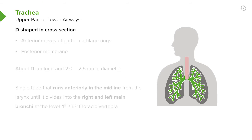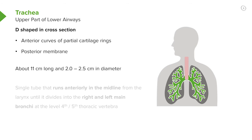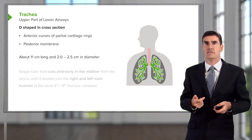The trachea is a D-shape in cross-section. Posteriorly, there's a flat membranous bit. Anteriorly, there are cartilage curves with muscle and membranous layers in between. It's about 11 centimeters long, a couple of centimeters in diameter.